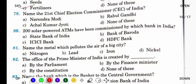Name the 21st Chief Election Commissioner of India. 21st जो थे — अभी तो 2018 से 23rd हैं — 21st जो थे वो हैं Achal Kumar Jyoti जी। यह January 2018 तक ही रहे थे.